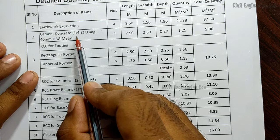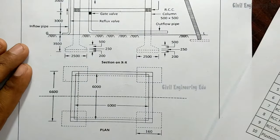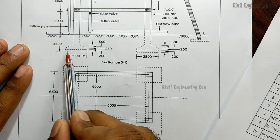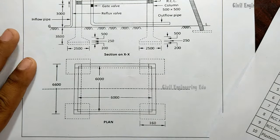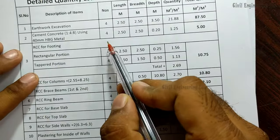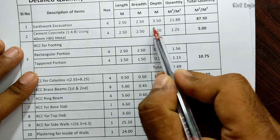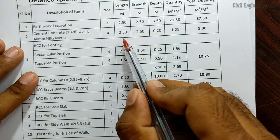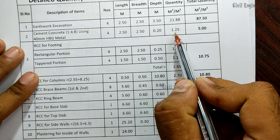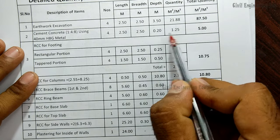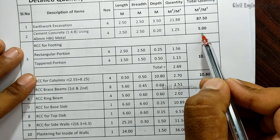Next is PCC — plain cement concrete of 1:4:8 mix ratio — also four numbers. Dimensions are 2.5 m by 2.5 m with a thickness of 0.2 meters (200 mm). Length × breadth × depth gives 1.25 cubic meters for one footing. Multiplied by four numbers, the total quantity of PCC is 5 cubic meters.